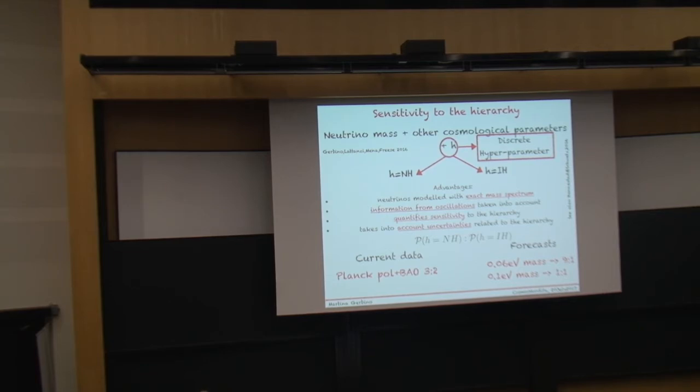The bottom line of this exercise is that unfortunately, at least for this combination of datasets, the entire sensitivity of cosmology to the hierarchy is induced by so-called volume effect. By the fact that if we go below 0.1 EV, then only normal hierarchy survives. So normal hierarchy is preferred with respect to inverted hierarchy just because it has access to a larger portion of the parameter space.